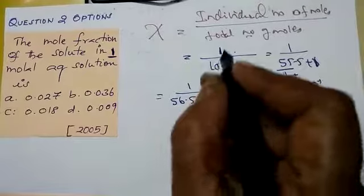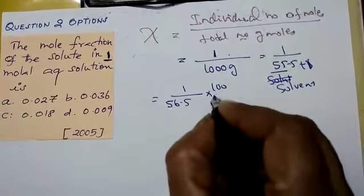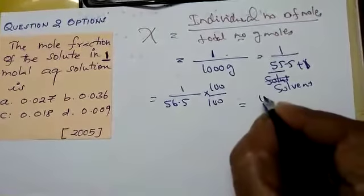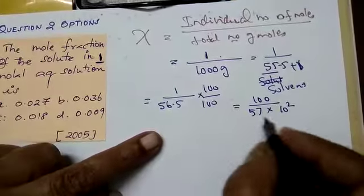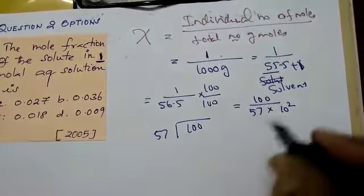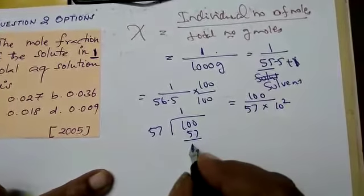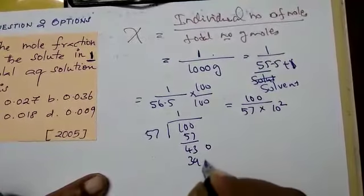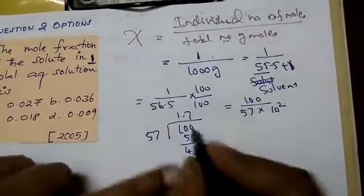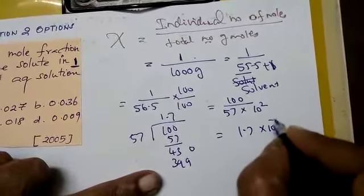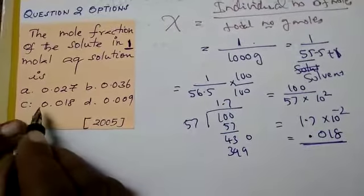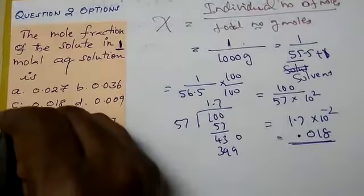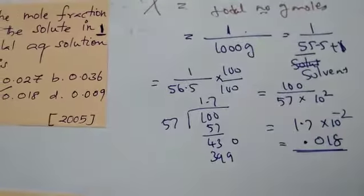For simplification, multiply both numerator and denominator by 100. So we get 100 divided by 56.5, which we can write as approximately 57 × 10². Simplifying, 100 divided by 57 gives approximately 1.7 × 10⁻², which we can also write as 0.017. The option C matches this answer, so C is the answer. The key concept is that the denominator is the total number of moles.